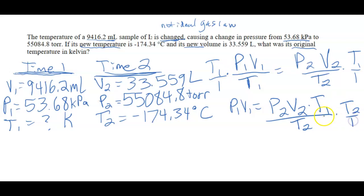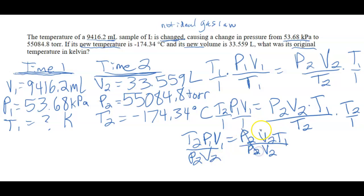I want to get rid of my T2. So I'm going to do the same thing on each side with T2. I'm going to get T2 P1 V1 equals P2 V2 T1. So remember, I'm trying to find T1. So I want T1 by itself. Divide each side by P2 V2. P2, P2 cancels out. So I have T1 is equal to T2 P1 V1 over P2 V2. Awesome.